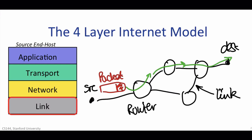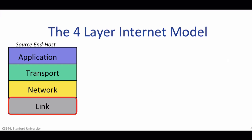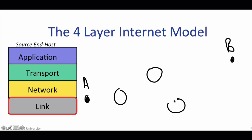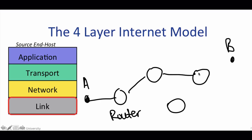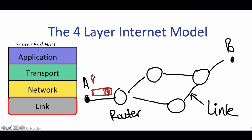The Internet is made up of end hosts, links, and routers. Data is delivered hop-by-hop over each link in turn, and data is delivered in packets. A packet is a self-contained unit consisting of the data we want to be delivered, along with a header that tells the network where the packet is to be delivered, where it came from, and so on. The link layer's job is to carry the data over one link at a time. You've probably heard of Ethernet and Wi-Fi — these are two examples of different link layers.